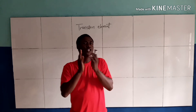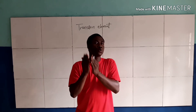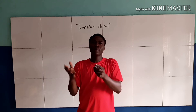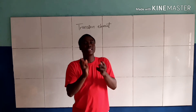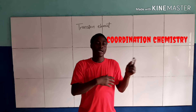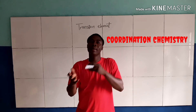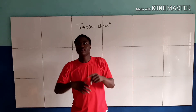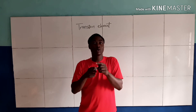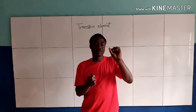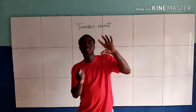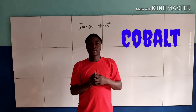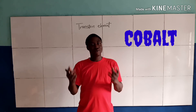Transition elements also help to form complex compounds. These complex compounds are very important in coordination chemistry, like potassium hexacyanoferrin, and like vitamin B12, called cyanocobalamin. From the word cobalamin, it means it came from a transition element called cobalt. Thanks for watching.